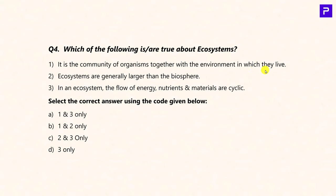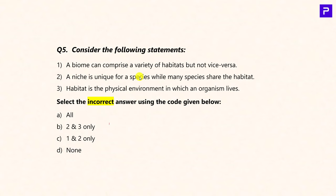Question 4: Which of the following are true about ecosystems? Statement 1: It is the community of organisms together with the environment in which they live — True. Statement 2: Ecosystems are generally larger than the biosphere — False; all ecosystems together are part of the biosphere. Statement 3: In the ecosystem, the flow of energy, nutrients, and materials are cyclic — True. So the answer is 1 and 3. Question 5: All four statements about biomes, niches, and habitats are correct — a biome can comprise a variety of habitats, a niche is unique to a species, several species can share a habitat, and habitat is the physical environment. Since the question asks for the incorrect answer, the answer is none.